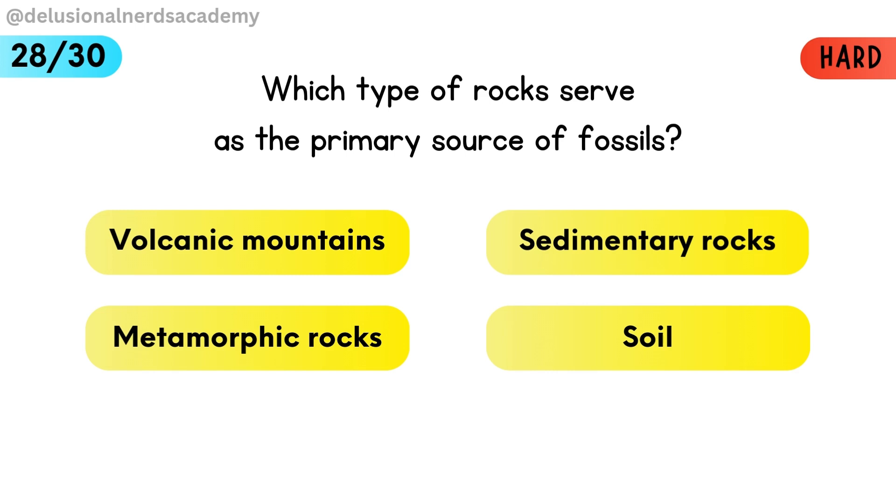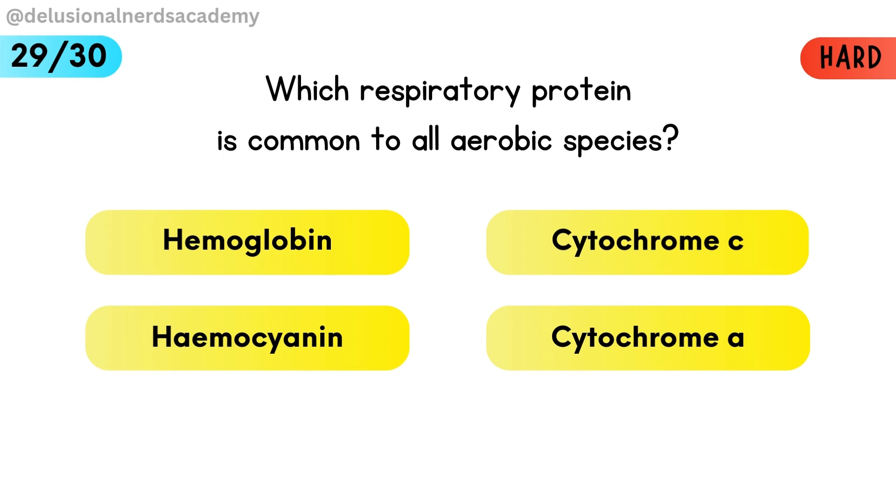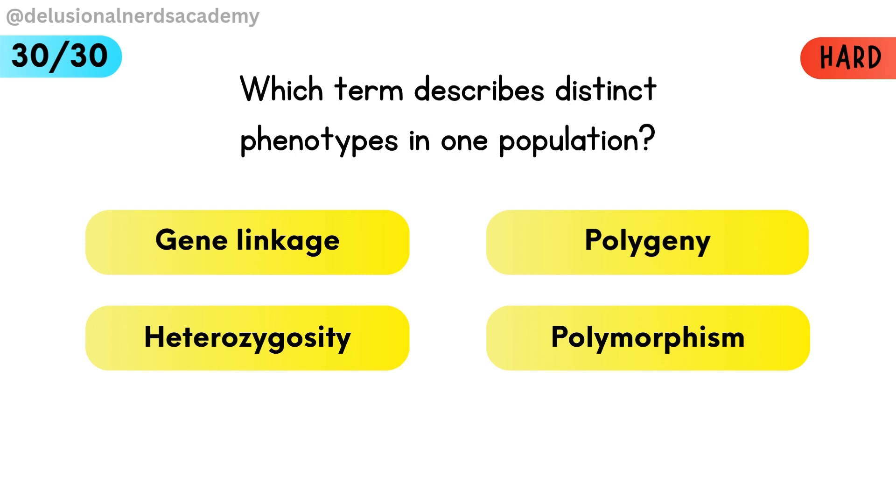Which type of rocks serve as the primary source of fossils? Sedimentary rocks are the main source of fossils. Which respiratory protein is common to all aerobic species? Cytochrome C is present in all aerobic organisms. Which term describes distinct phenotypes in one population? Polymorphism means the presence of multiple phenotypes in one population.